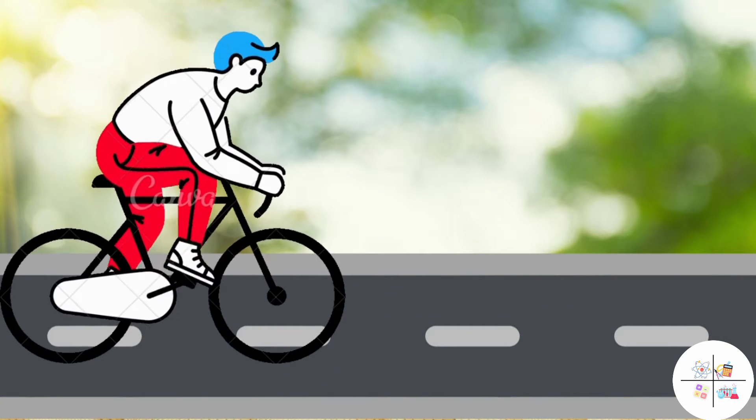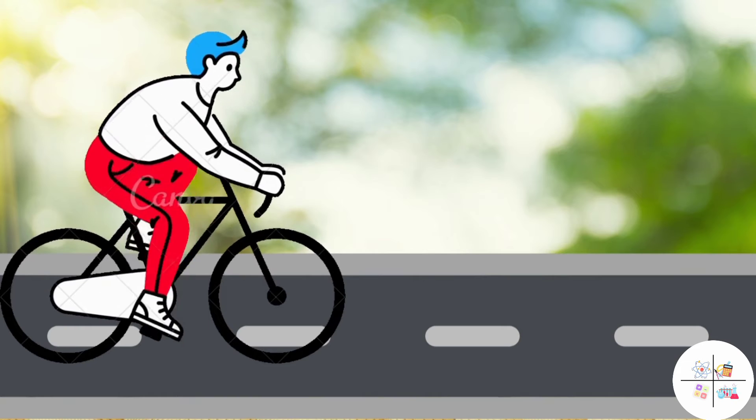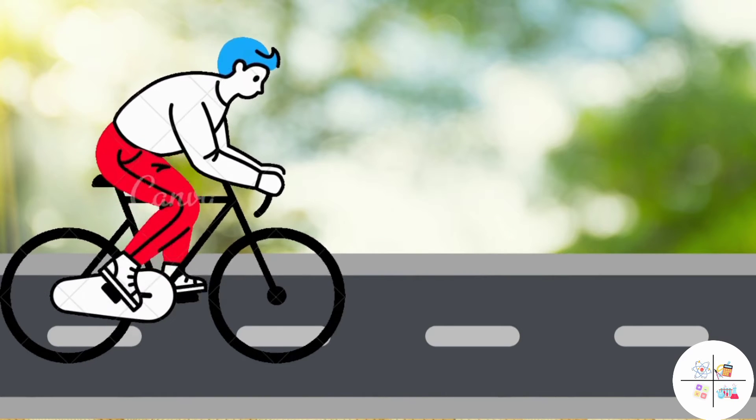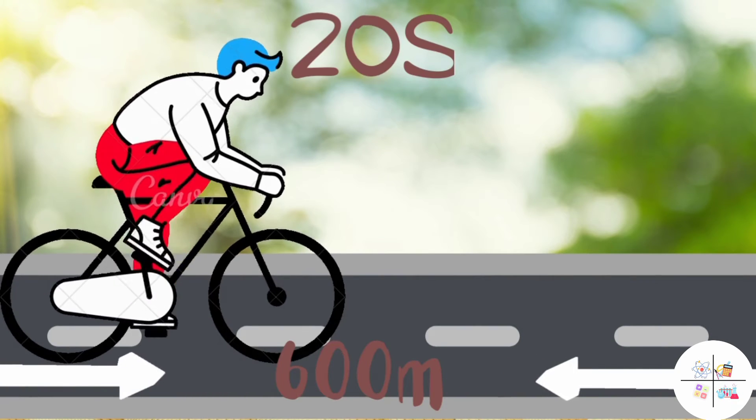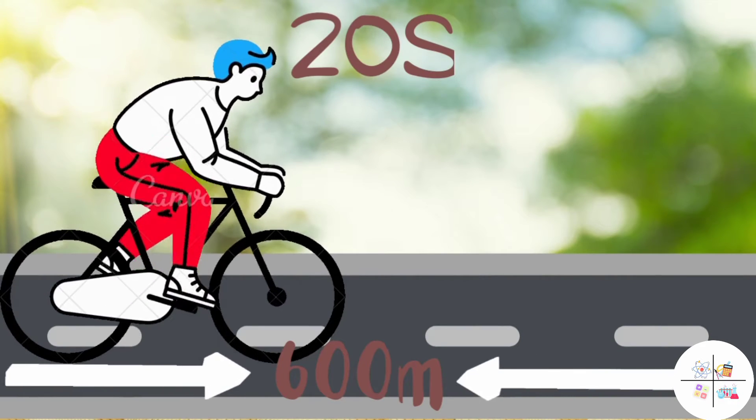Consider a bike moving on a straight road. Suppose the time and distance it takes to reach its destination is 20 seconds and 600 meters.